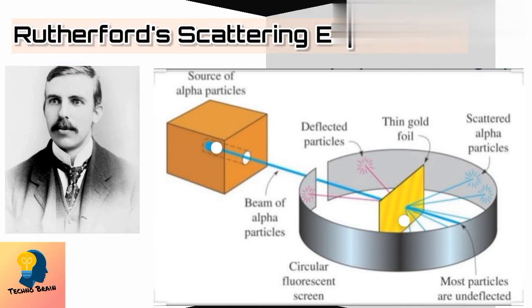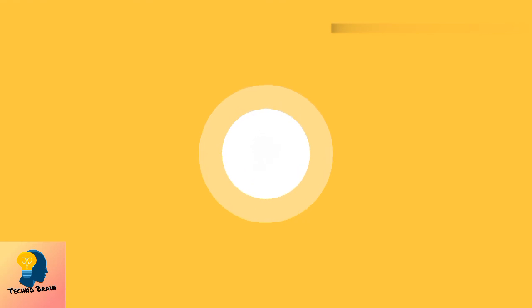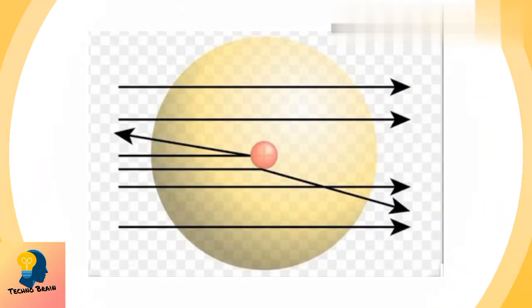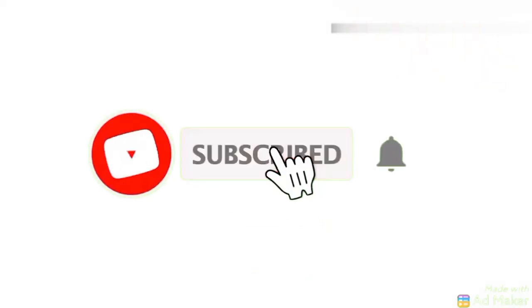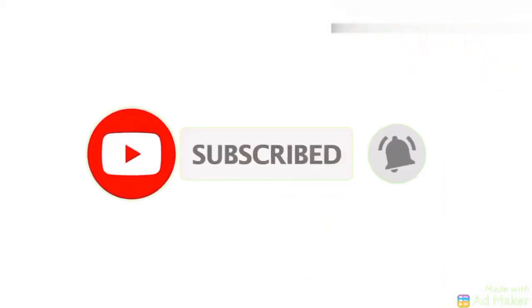From this experiment, particles going in a straight line through the foil indicates that there is empty space in the atom. Particles which get deflected indicate there must be heavy parts at the center of the atom.